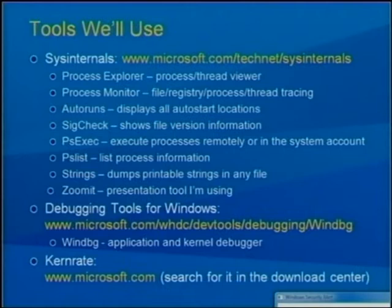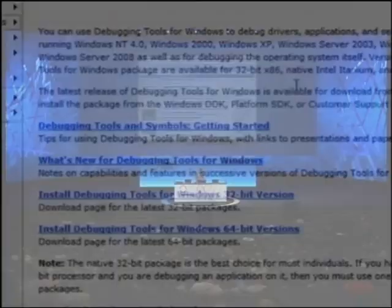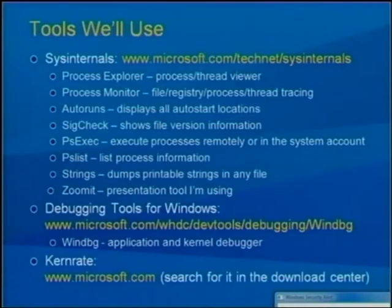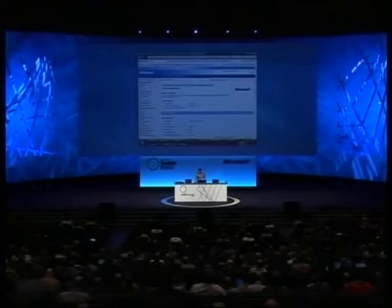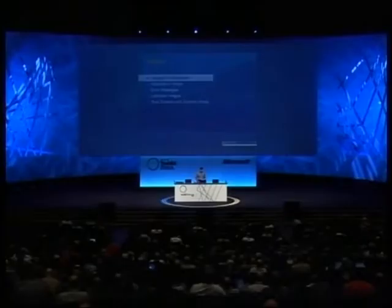Another tool I'm going to use is WinDbg, part of the Debugging Tools for Windows package, available as a free download from Microsoft — just search for Debugging Tools on Microsoft.com. I'm also going to show a tool called KernRate, a kernel-mode sample profiling tool. It used to be part of the resource kit and is now available for download; search for KernRate on Microsoft.com. It works on Vista and Server 2008. Additionally, I'll use ZoomIt, also a Sysinternals tool, to zoom in on the screen and annotate things.